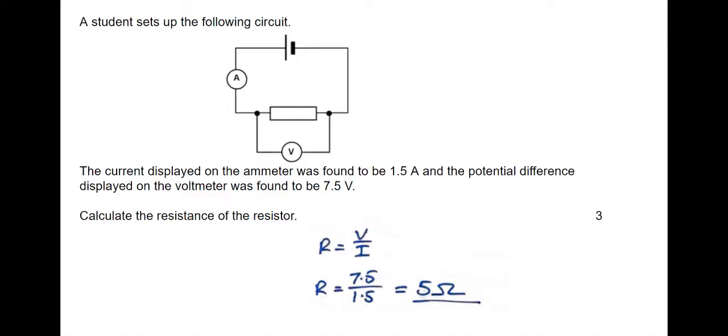Here's a different way of writing it, and this is absolutely fine. We've rearranged the formula first, one mark. We've put the numbers into the formula, one mark. And we have got the correct answer, one mark. That's worth three marks too.